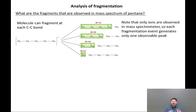Note that only ions are observed in the mass spectrometer. Each fragmentation event, while it may generate two fragments, only the fragment highlighted in green is observed in the mass spectrum. So each fragmentation event generates only one observable peak.